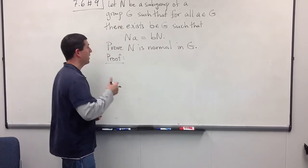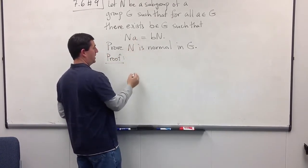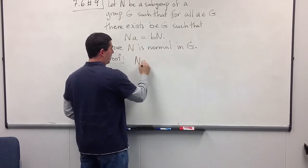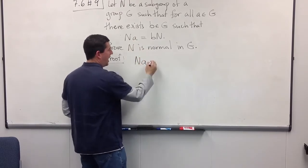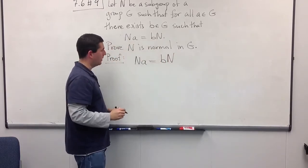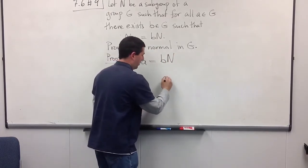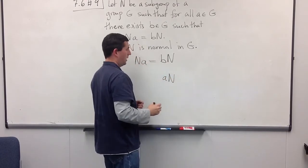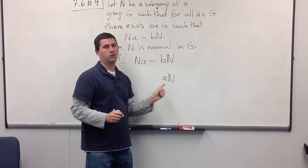In particular, we know the following: if we start with some element A so that we know that we have some coset NA, and there's some element B such that NA equals BN, we know there's another coset out there which is AN.